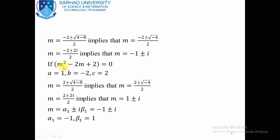For the second quadratic equation m² - 2m + 2 = 0, the coefficients are a = 1, b = -2, c = 2. Applying the quadratic formula: m = (2 ± √(4 - 8)) / 2 = (2 ± √(-4)) / 2. Since √(-4) = 2iota, taking common 2, we obtain m = 1 ± iota. So this quadratic equation gives another complex root, different from the first.